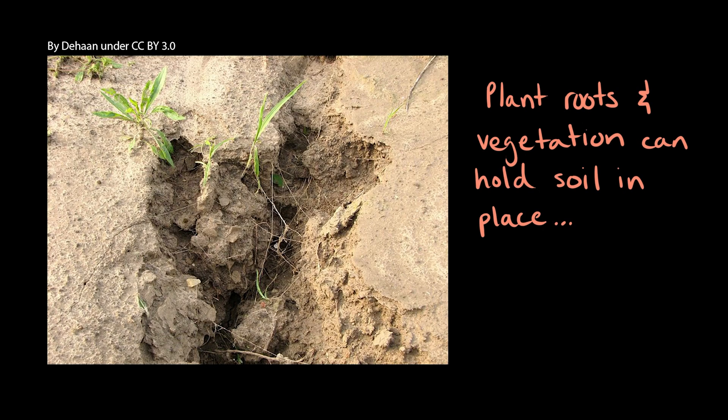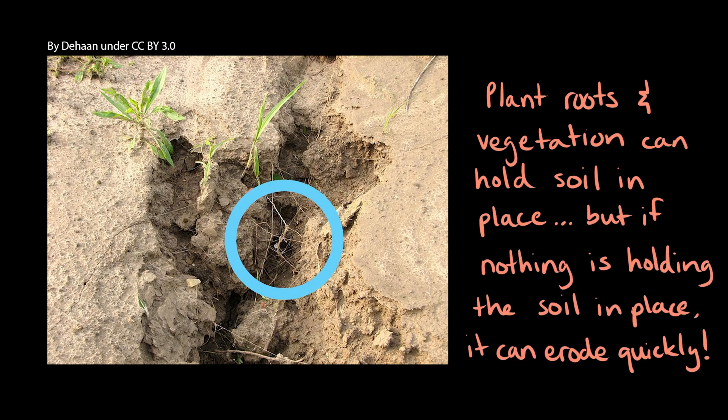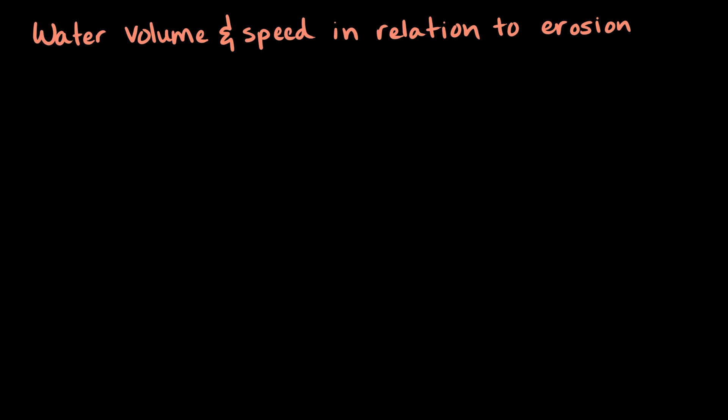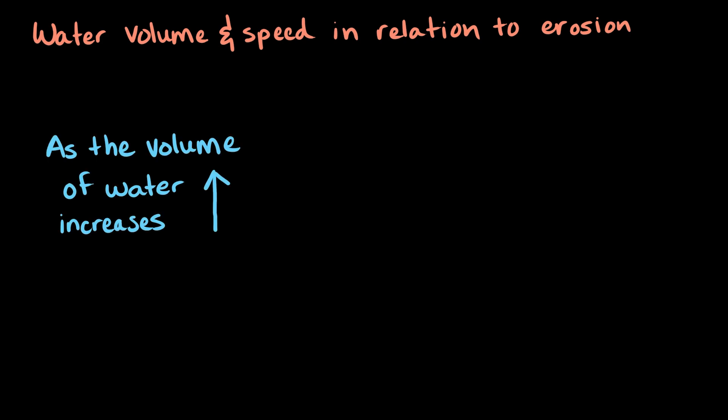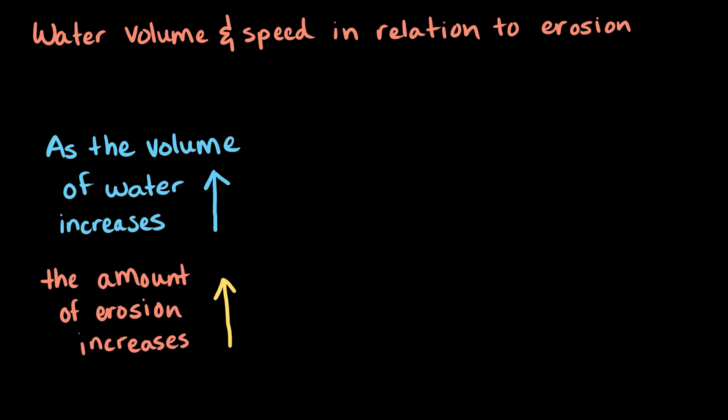Plant roots and vegetation can hold soil in place and prevent or slow soil erosion. But, if soil has nothing to hold it down, water can erode away soil very quickly. As the volume of water increases, so does its power of erosion. In turn, a large river can erode more soil and rock quicker than a small river can.